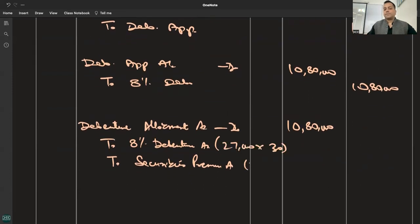30 rupees, or 27,000 into 10 - that's 2 lakh 70 thousand. To securities premium account at 27,000 into 30 is 10,80,000.